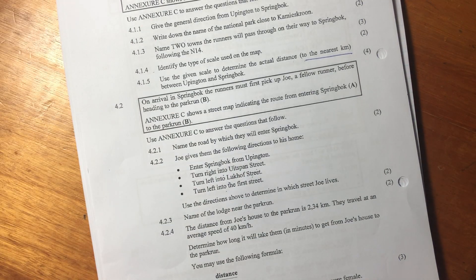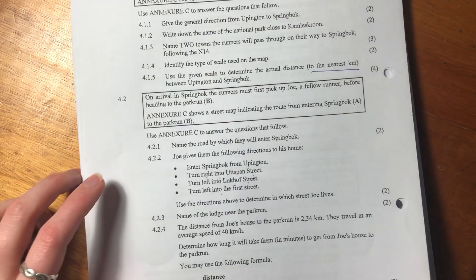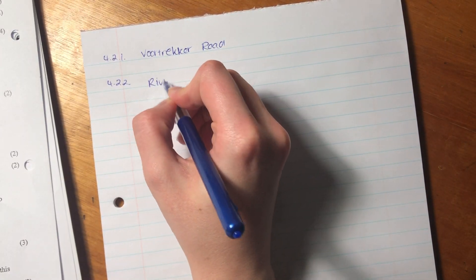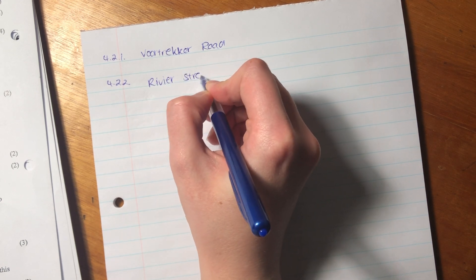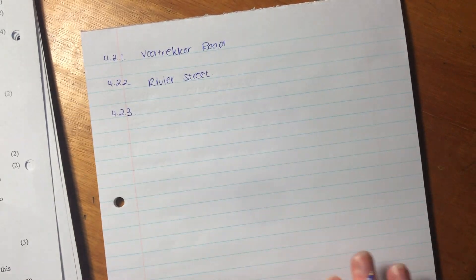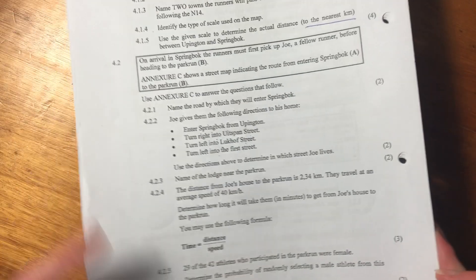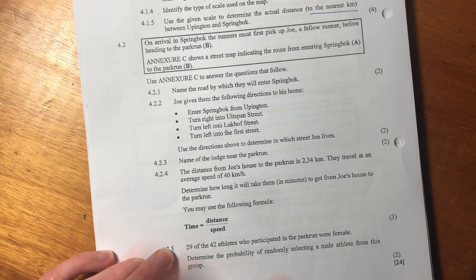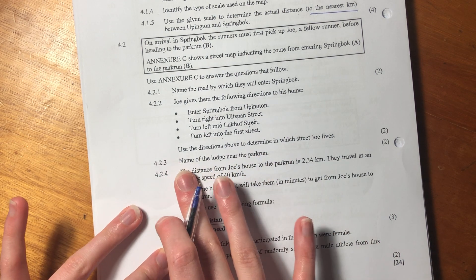Do you see that? So what they are testing here is whether you can take words and interpret it on a map. So let's say Refere Street. Those questions can sometimes be quite difficult. I'm also shocking with directions. So sometimes I can't even read what's going on on a map. So that's quite a good question to practice.